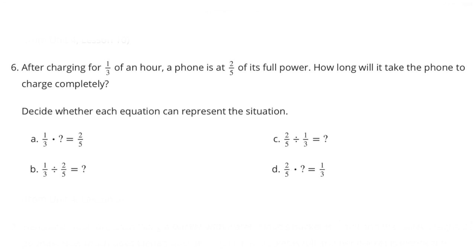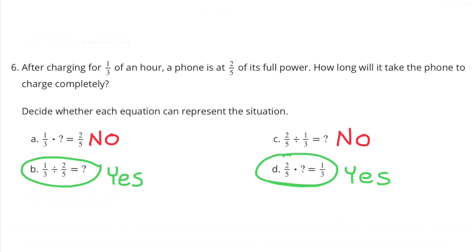Number 6. After charging for one-third of an hour, a phone is at two-fifths of its full power. How long will it take the phone to charge completely? I've narrowed it down to two equations: B: one-third divided by two-fifths equals what number, and D: two-fifths of what number equals one-third.